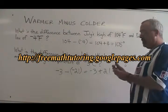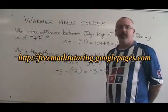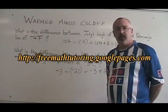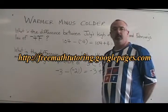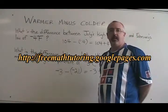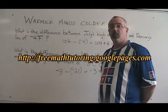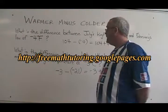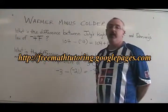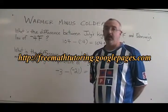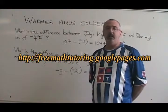The warmer minus colder trick always works, even if both temperatures are positive, or both temperatures are negative, or one is positive and the other is negative. You just have to remember: figure out which is the warmer temperature, put it first, then a minus sign, then the colder temperature including its sign if it has one, and then solve it.